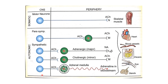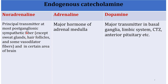In the sympathetic nervous system, the preganglionic fibers are shorter and release acetylcholine, while postganglionic fibers are longer and release noradrenaline, acetylcholine, as well as adrenaline. Postganglionic fibers release noradrenaline, and adrenaline is the major hormone of the adrenal medulla. Dopamine is the major transmitter in the basal ganglia, limbic system, CTZ, and anterior pituitary.